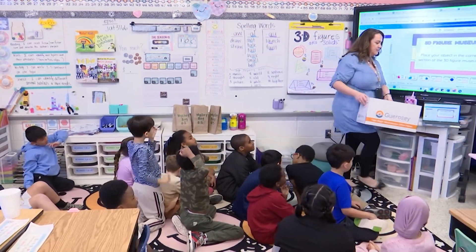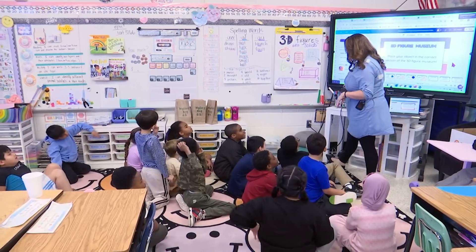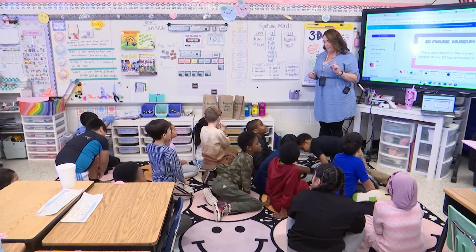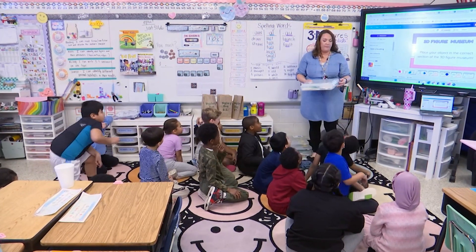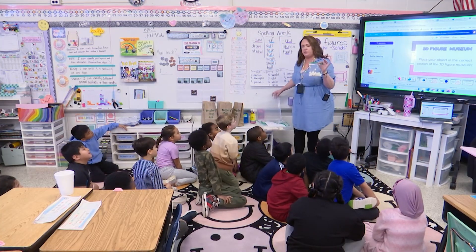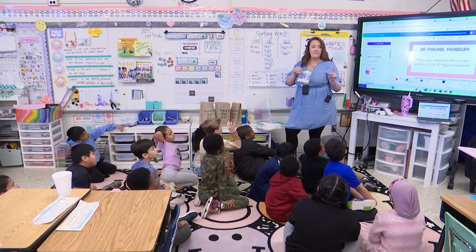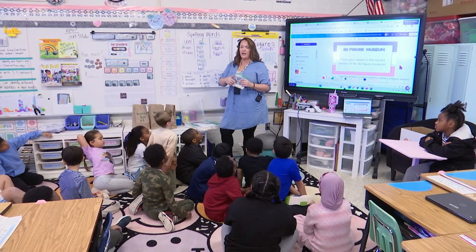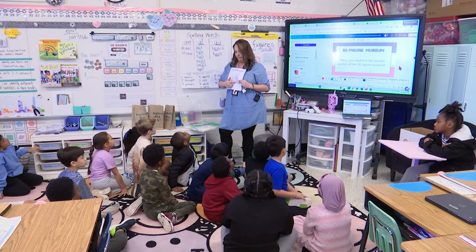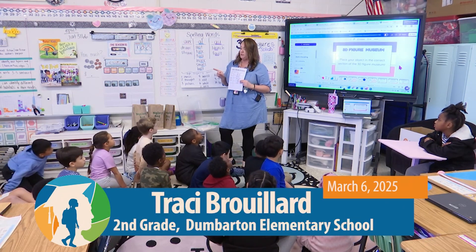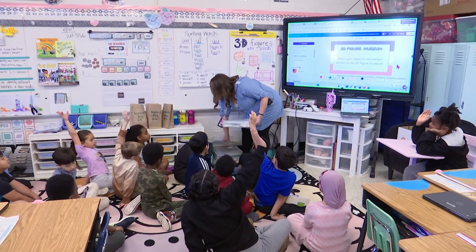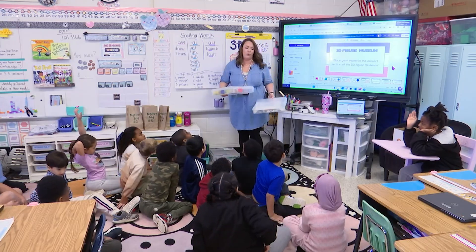Next we're going to build some solid figures at our seats. We have four stations and we'll rotate so you get a chance to do all of them. Station one is marshmallows and toothpicks. The marshmallows are going to be your vertices and the toothpicks are your edges. You're going to build different three-dimensional shapes — definitely try the cube and rectangular prism first. A cylinder, sphere, and cone you won't be able to build. Why? Because they're round.